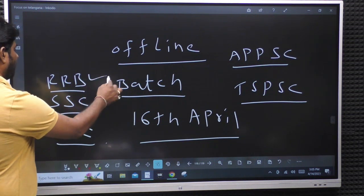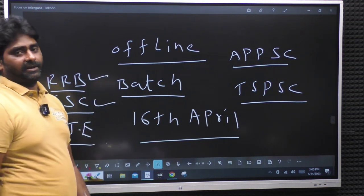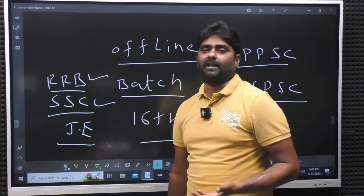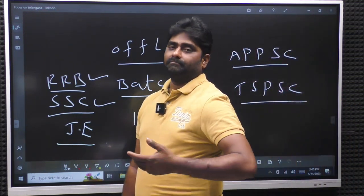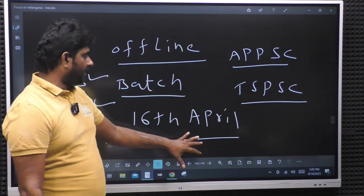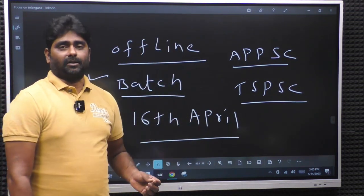RRB, SSC, and junior engineers - we start on April 16th. Batch starts on April 16th. Interested candidates, please consult with Rupa numbers.